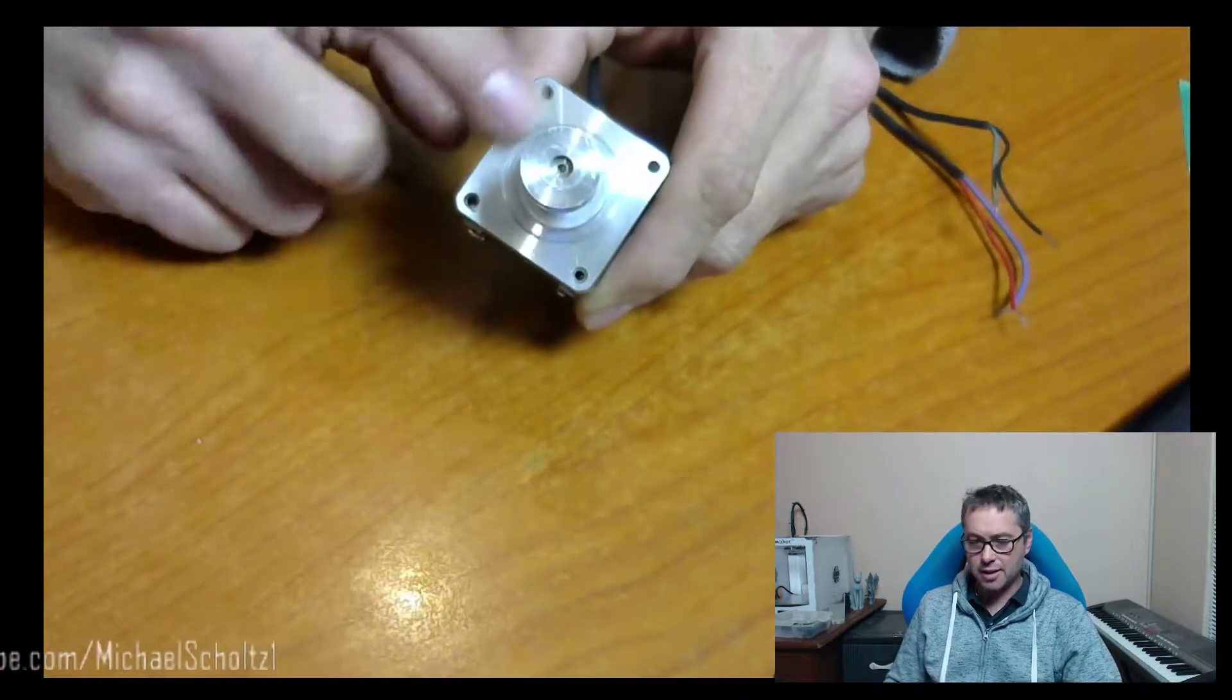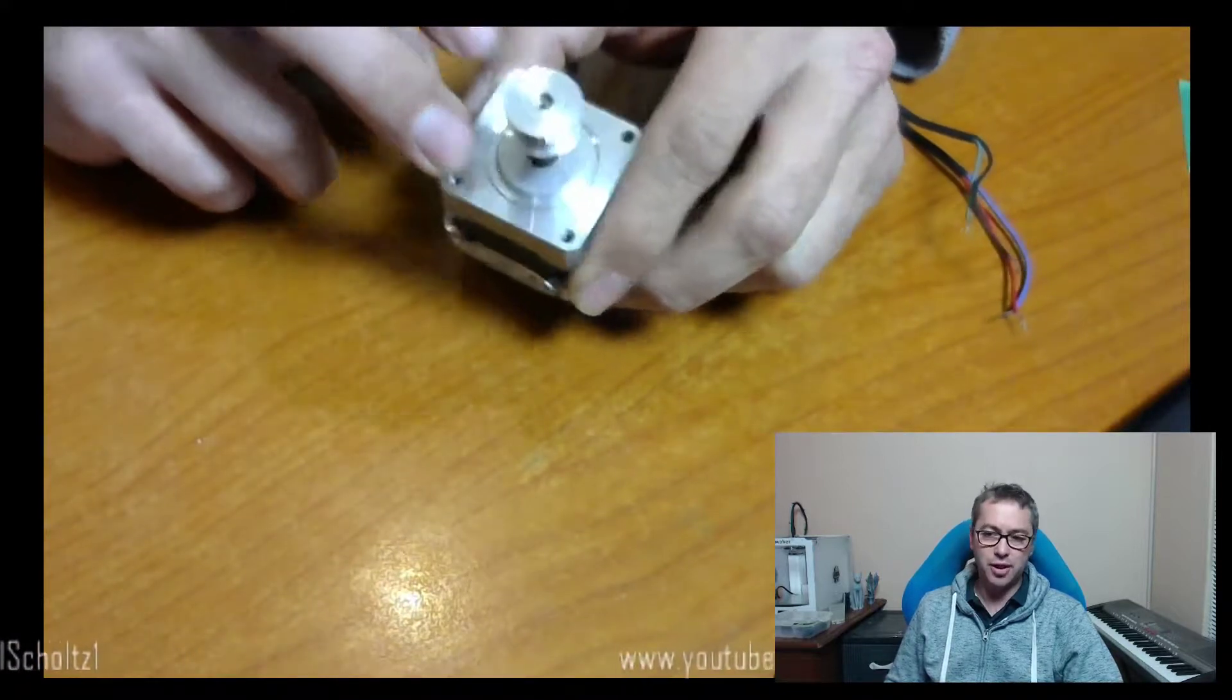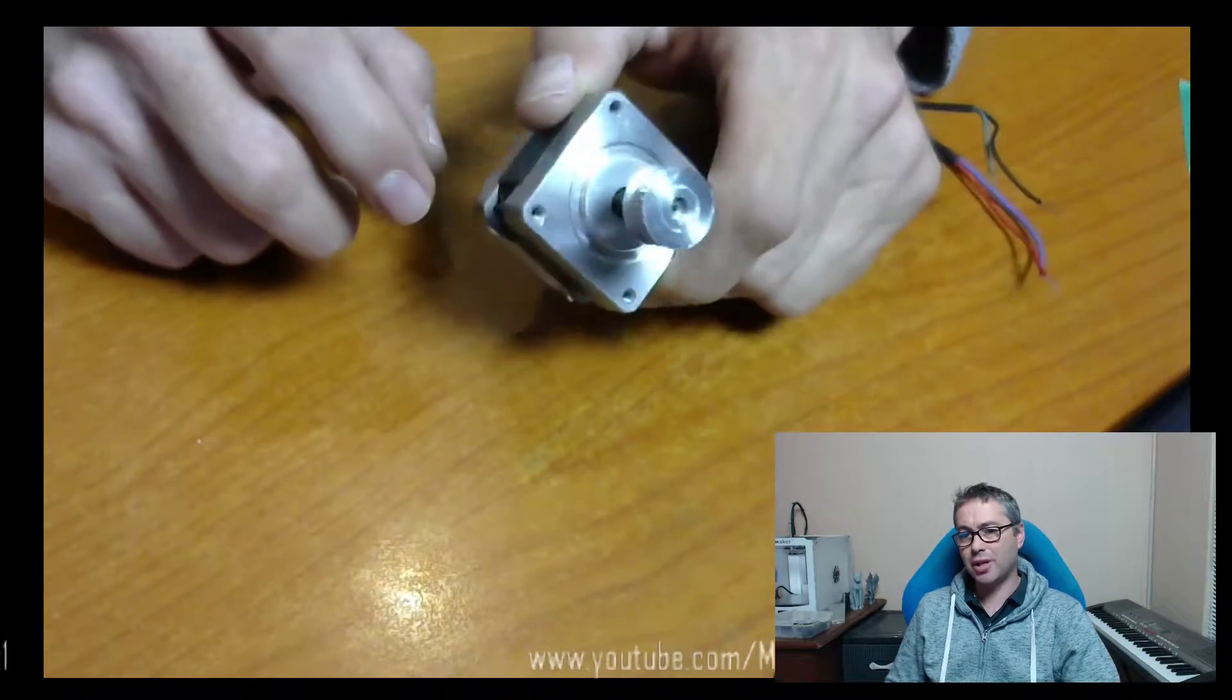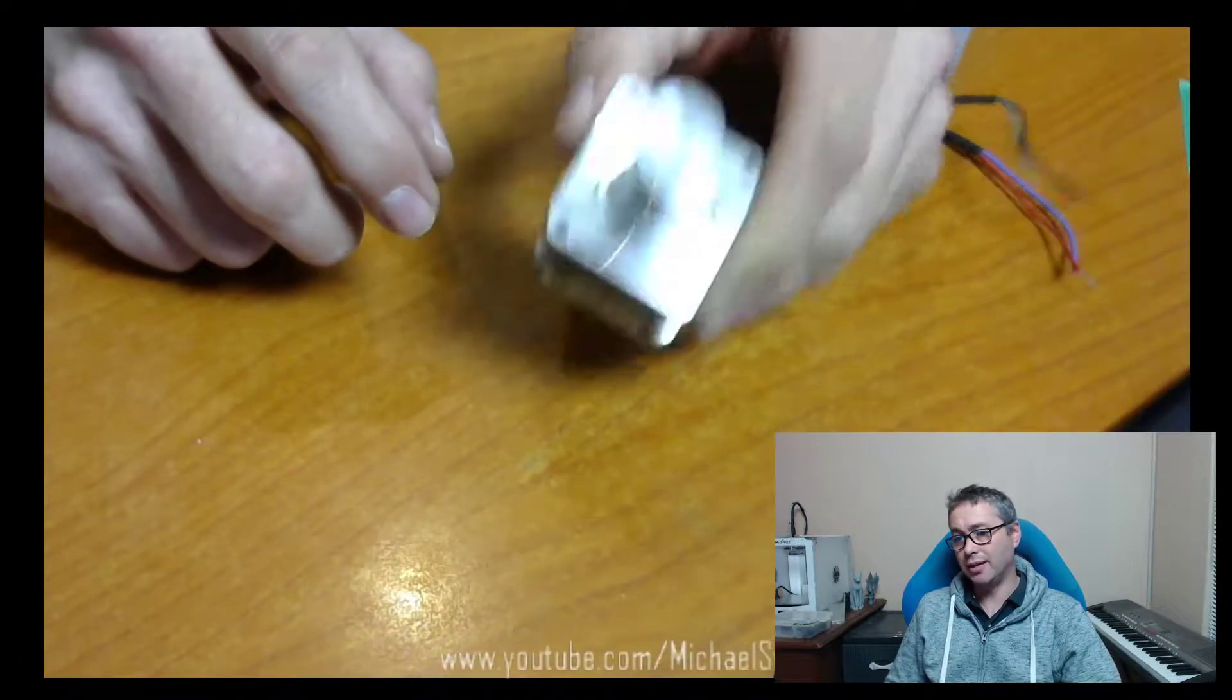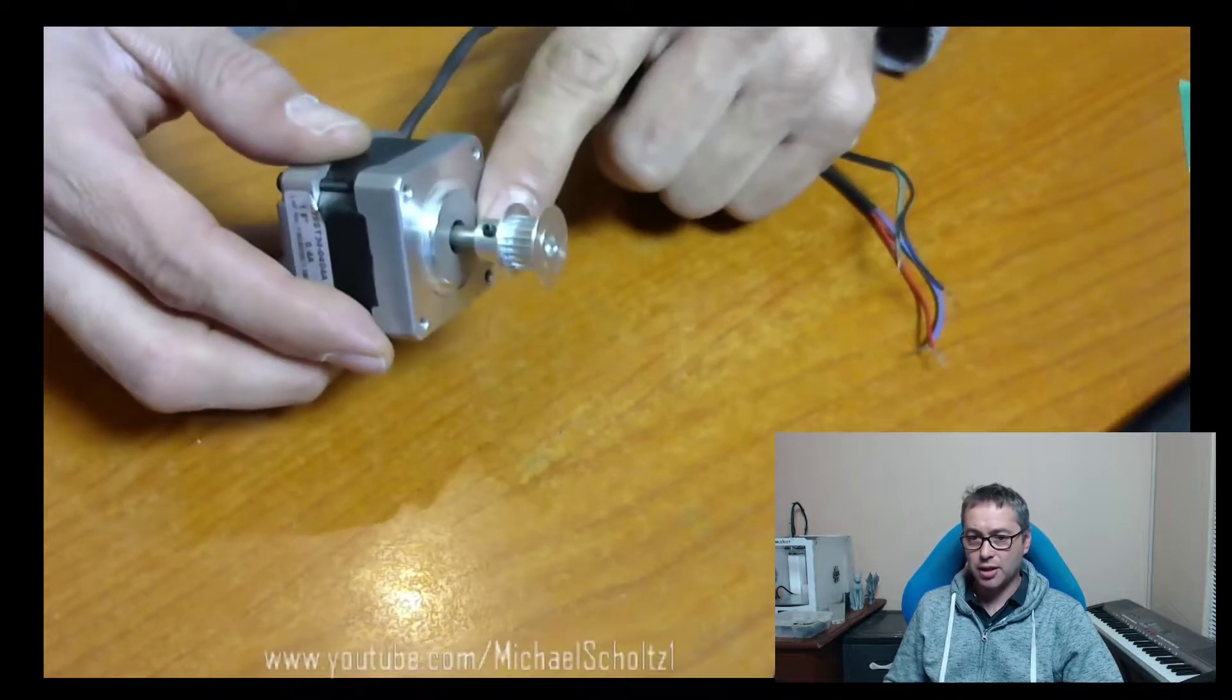It's 1.7 inches, which is odd because that's about the only thing in here that is in Imperial. Everything else is metric. Speaking of metric, the shaft is 5 millimeters in diameter.